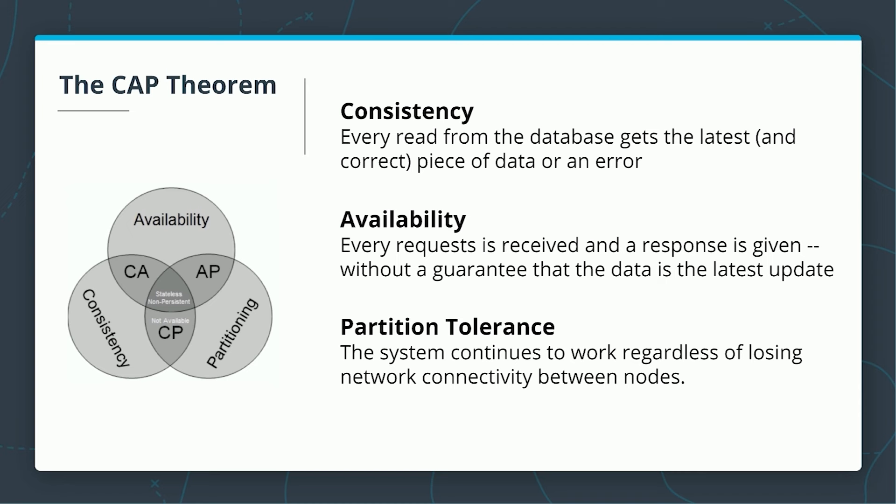Apache Cassandra and other NoSQL databases choose to be highly available at the potential cost of consistency. It is an AP — availability and partition tolerant — database. Remember, this only comes up during network failures. We're learning about these concepts because the design of NoSQL databases is different, and that difference affects how we will model the data.